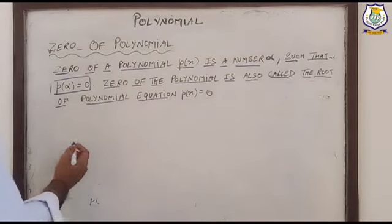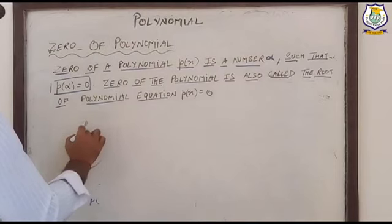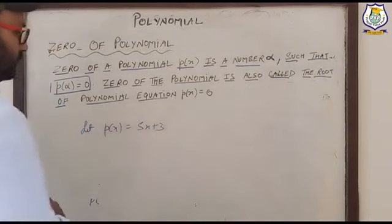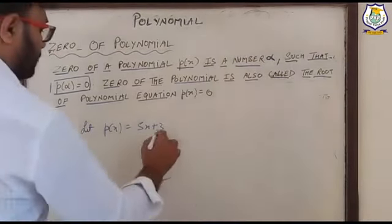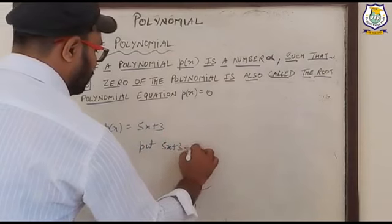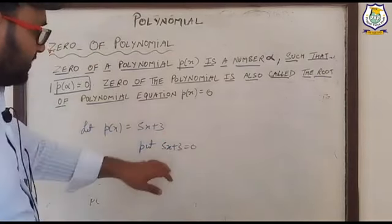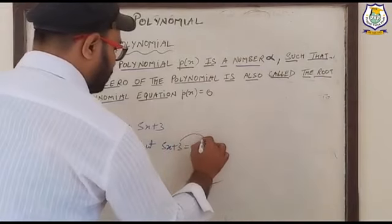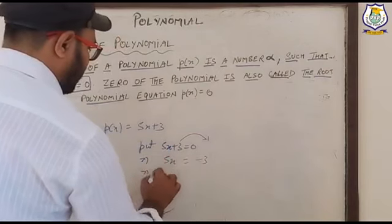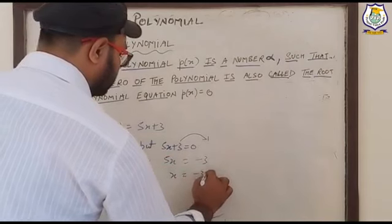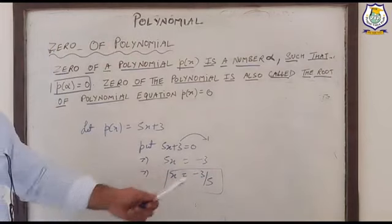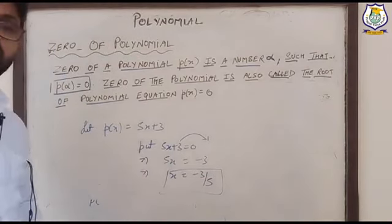So how can we find the zero of a polynomial? Suppose we have p(x) equal to five x plus three. To find the zero, put p(x) equal to zero: five x plus three equals zero. It implies five x equals minus three, therefore x equals minus three upon five. This is the zero of the polynomial.